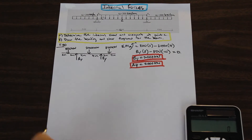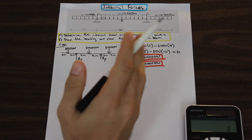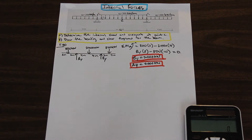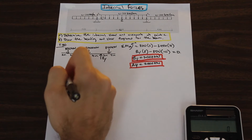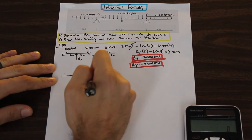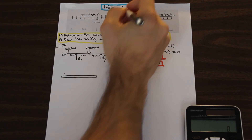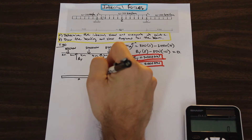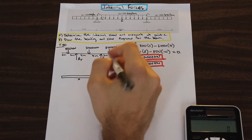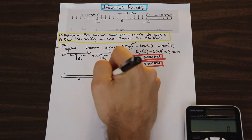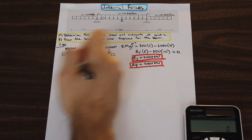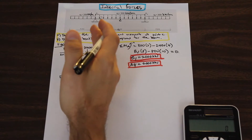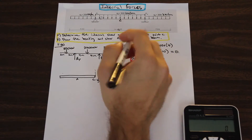Now that we have the reactions, we can determine the internal shear and moment at point C. You can cut from the right or the left — we will cut from the left. When you cut the beam, you need to know the sign convention. We draw the cut section showing point A to point C. At the cut face, the shear force V acts downward and the moment M acts in the counterclockwise direction. Then we evaluate the moment and shear from this cut.